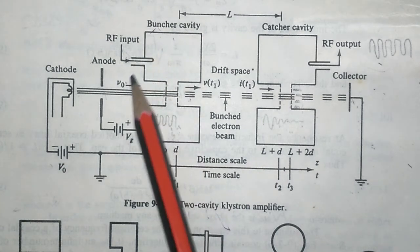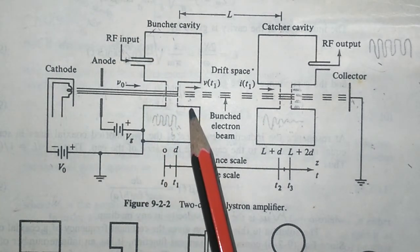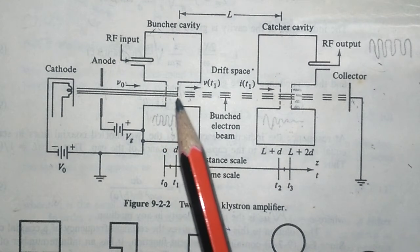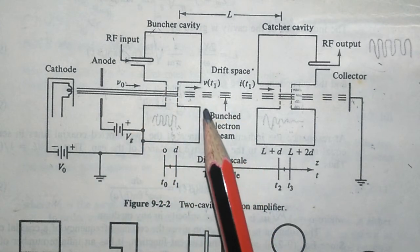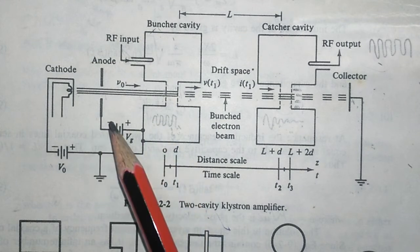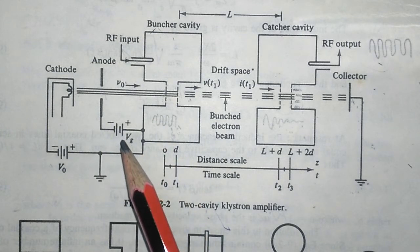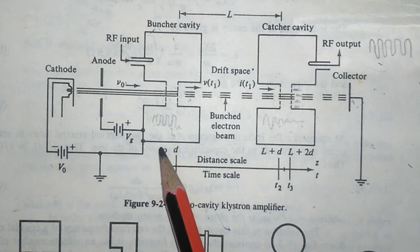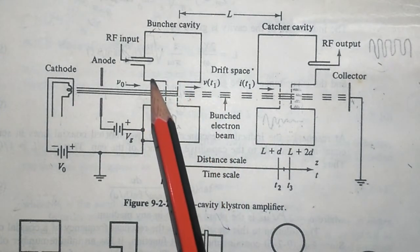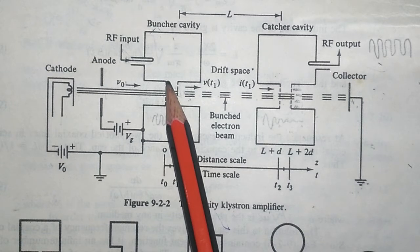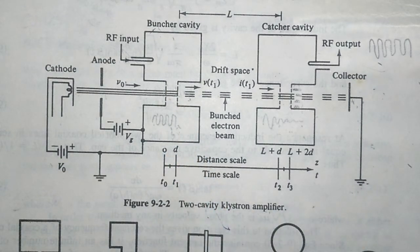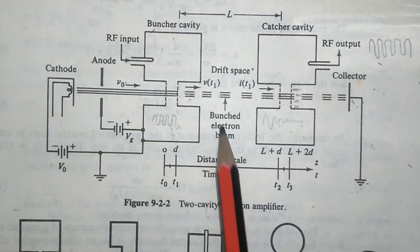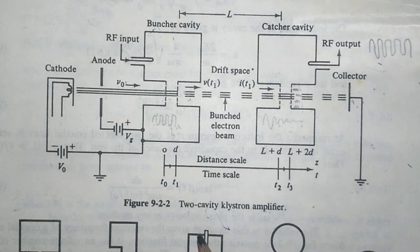In a re-entrant cavity, the boundaries extend into the interior of the cavity. This geometry serves a purpose: it addresses the transit angle effect. In the transit angle effect, electrons take too long to reach the anode before the voltage changes. Since transit time equals distance divided by velocity, reducing the gap distance reduces transit time. The re-entrant cavity has a smaller gap compared to a rectangular cavity, which takes care of the transit angle effect — a limitation of conventional vacuum tubes.